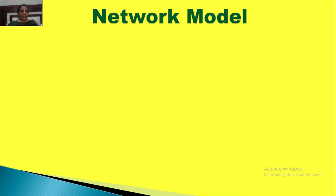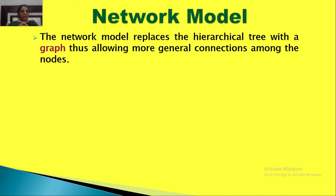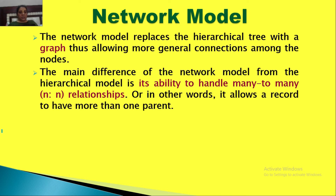When we compare the network model to the hierarchical model, what new things are introduced? Number 1: in the hierarchical model there was a tree-like structure, but here we have a graph-like structure. The network model has replaced the hierarchical tree with a graph, and all the connections between nodes are more generalized. Number 2: the major difference is that the network model can handle many-to-many relationships, which the hierarchical model could not. The hierarchical model could handle only one-to-one or one-to-many relationships.